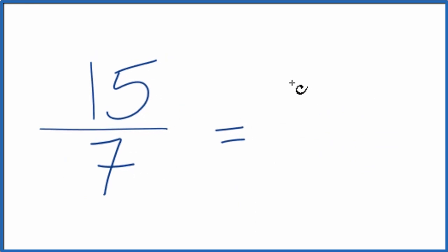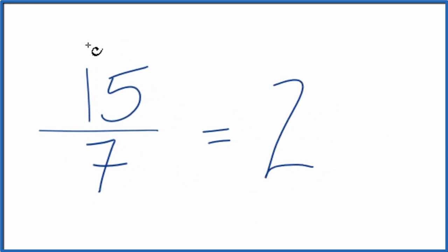7 goes into 15. Let's see, 2 times 7 is 14, and then we just have 1 left over. Bring the denominator across, and the improper fraction 15 sevenths, it does equal the mixed number 2 and 1 sevenths.